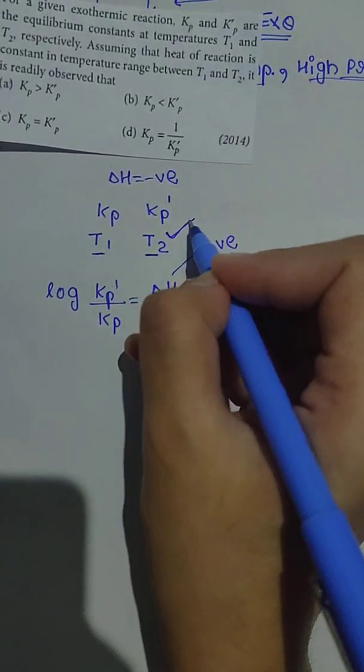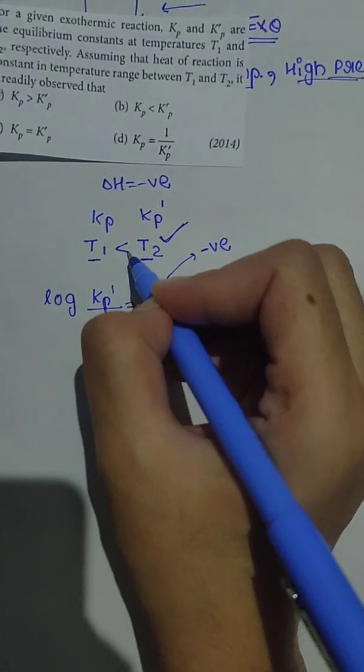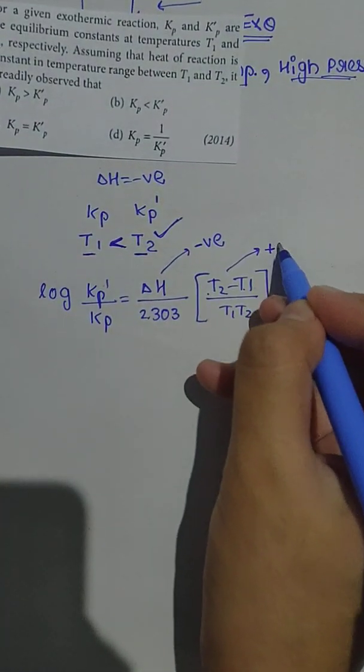Temperature will increase. T2 greater than T1, temperature will increase. T2 minus T1, this value will be positive.